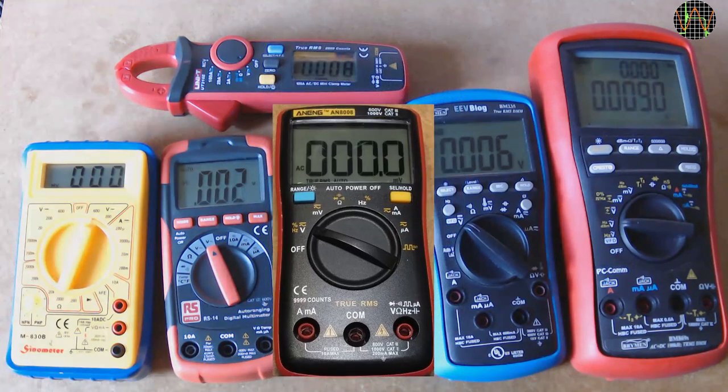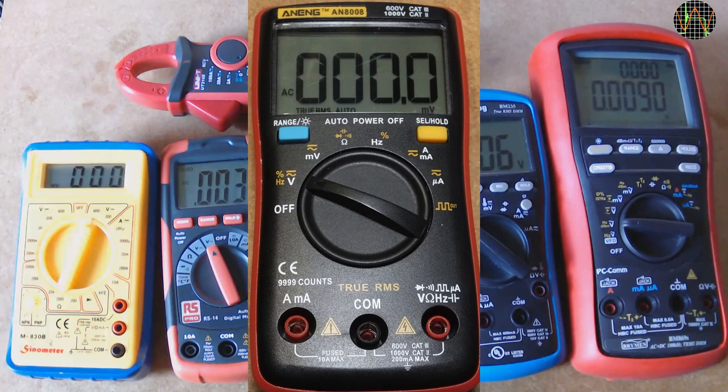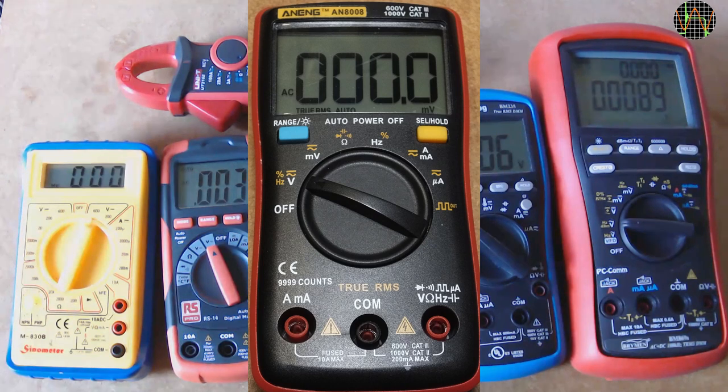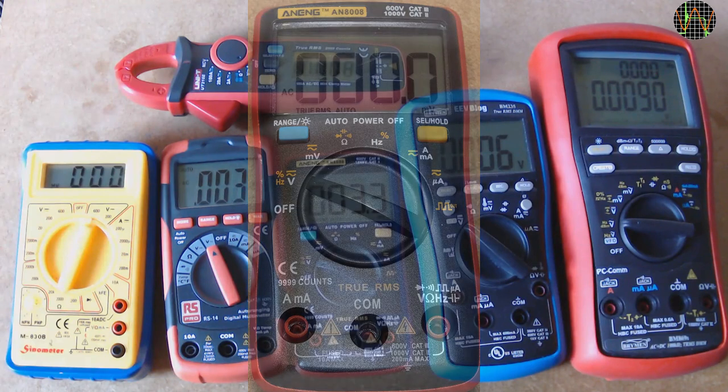The Anang AN8008? Yes, true RMS is not only written under the selector switch, but also in the LCD to make sure you notice it. Banggood has this for less than £13.